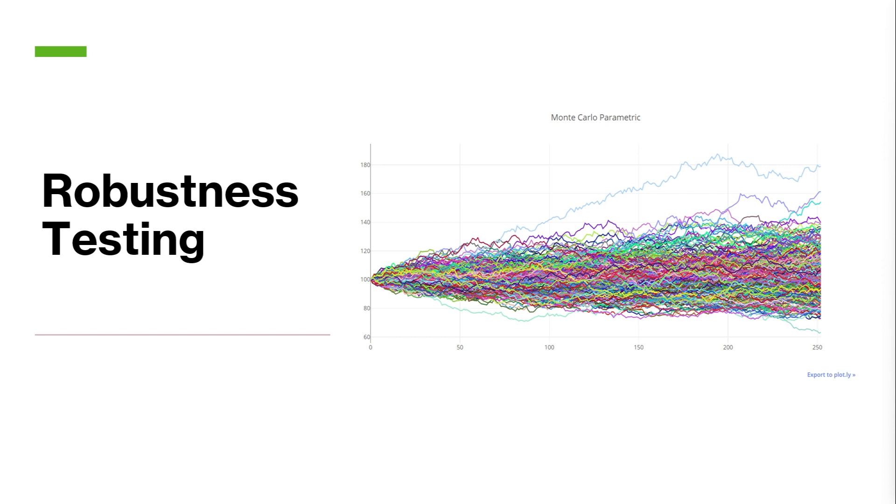We have Monte Carlo simulations. These employ and generate multiple variations of the strategy by randomizing different factors. So you have reshuffling and resampling and a couple others. This helps assess the strategy's performance under different market conditions and various inputs to allow you to see the robustness of it.